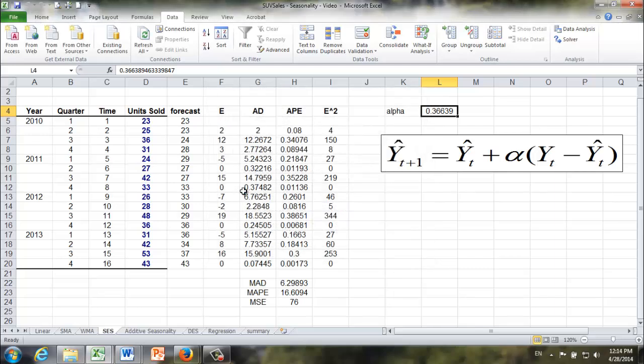See what we find. The optimal alpha value turns out to be 0.36639. As a result, the optimal or the minimal MSE is going to be 76. And that's how the simple exponential smoothing method works. And that's how we can find the optimal alpha value to minimize MSE.